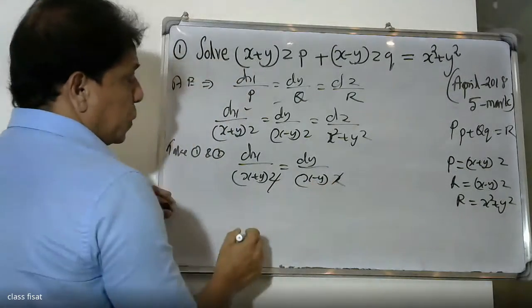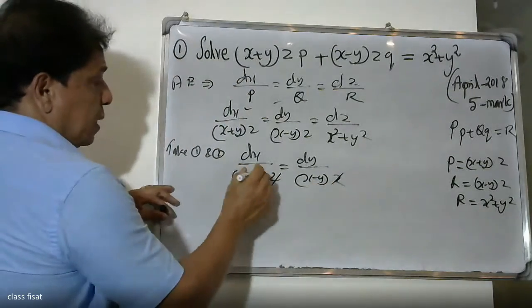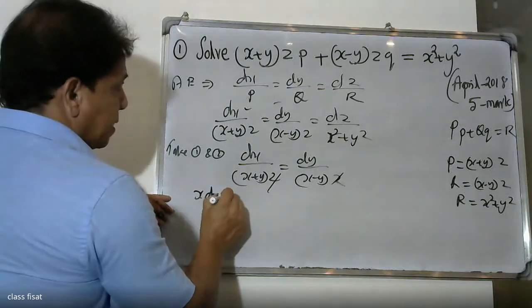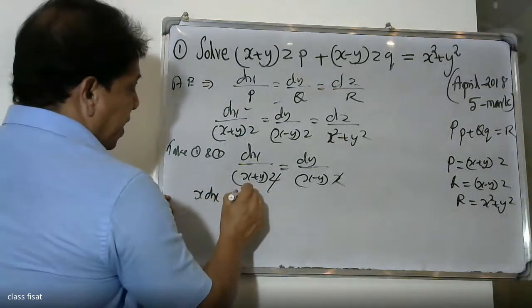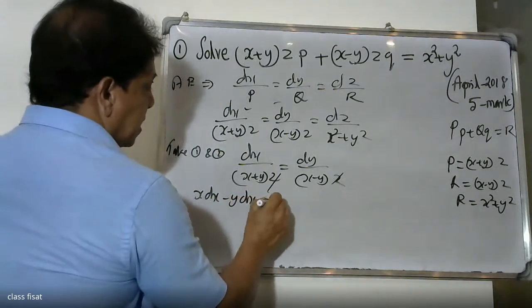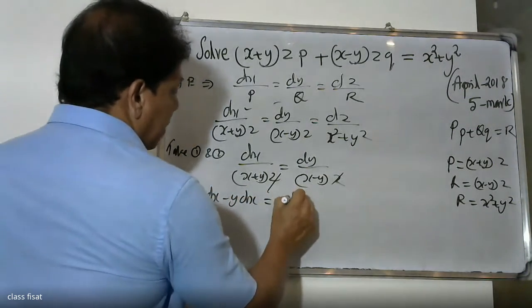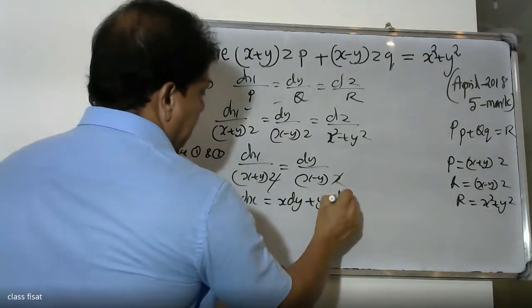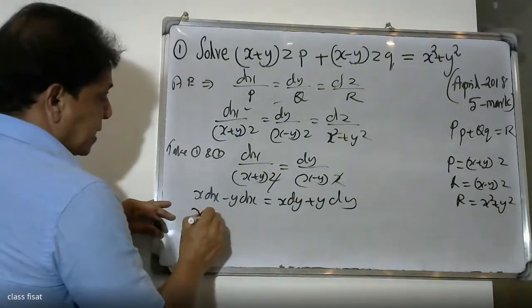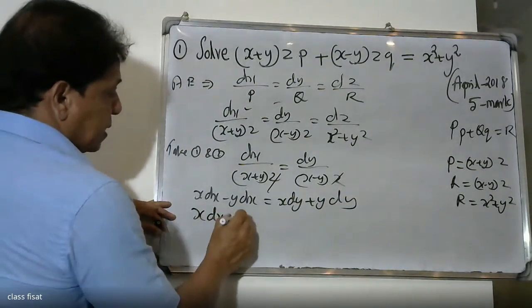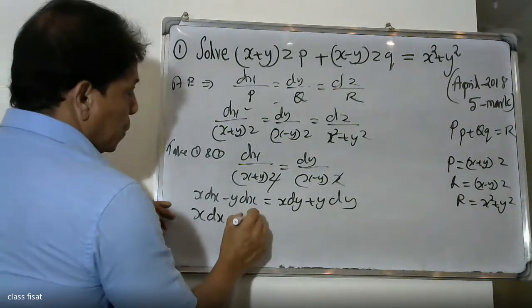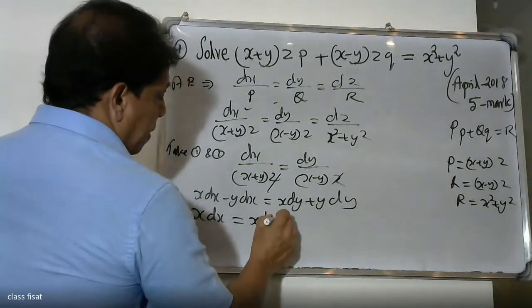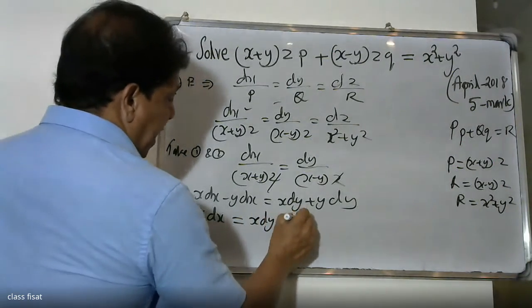dx by (x+y)z is equal to dy by (x-y)z. Cancel the z terms. When we cross multiply: x·dz minus y·dz equals x·dy plus y·dz. So x·dz is equal to x·dy plus y·dz.